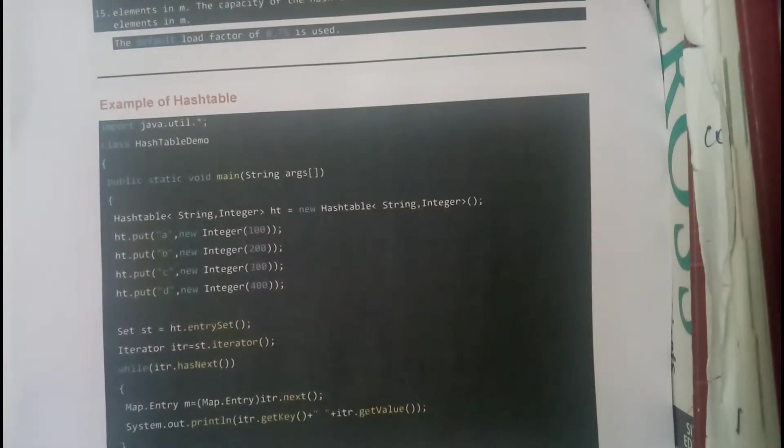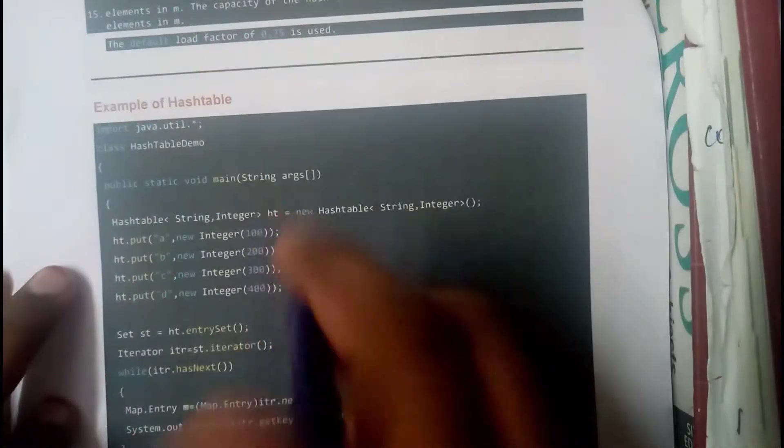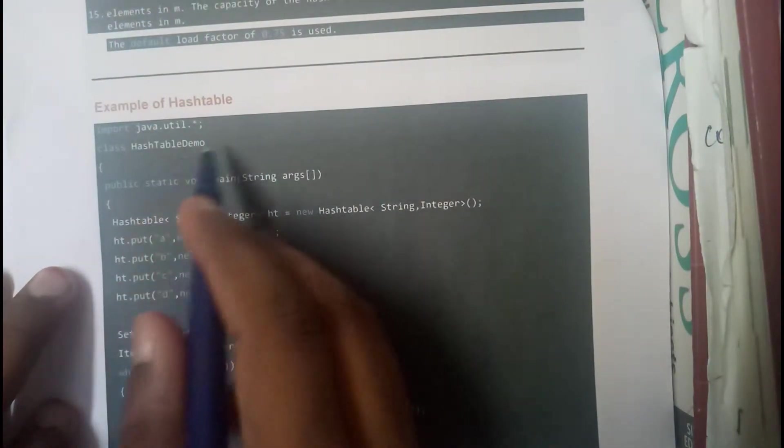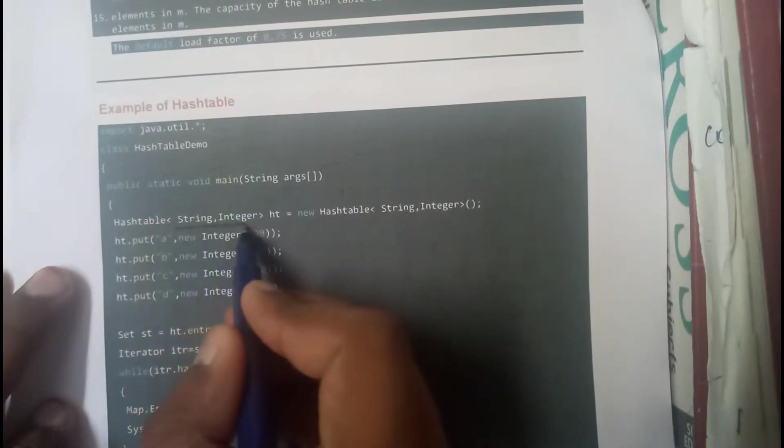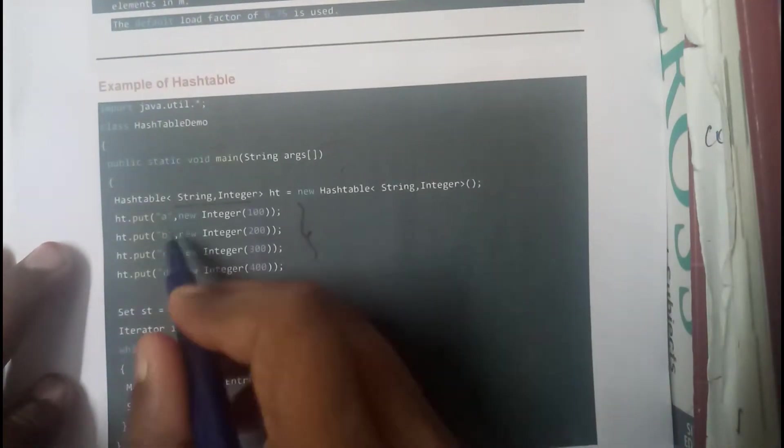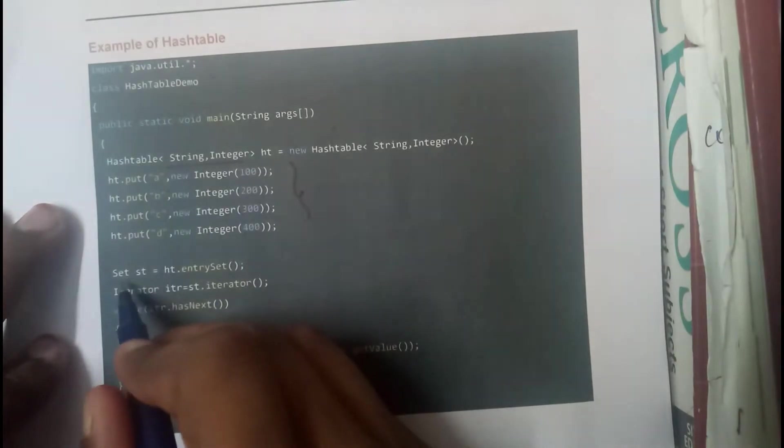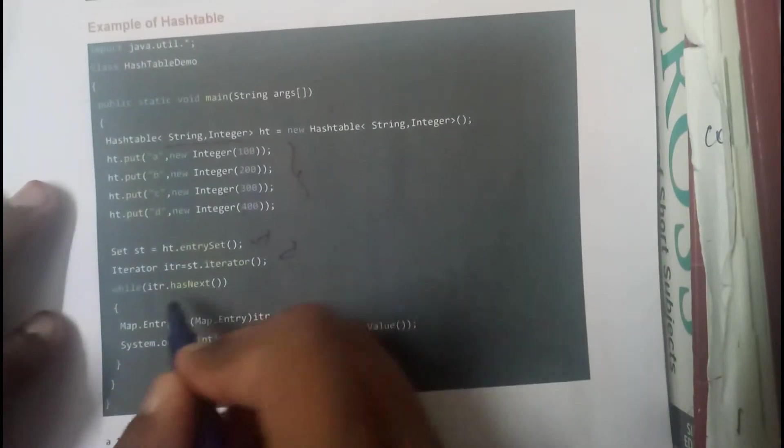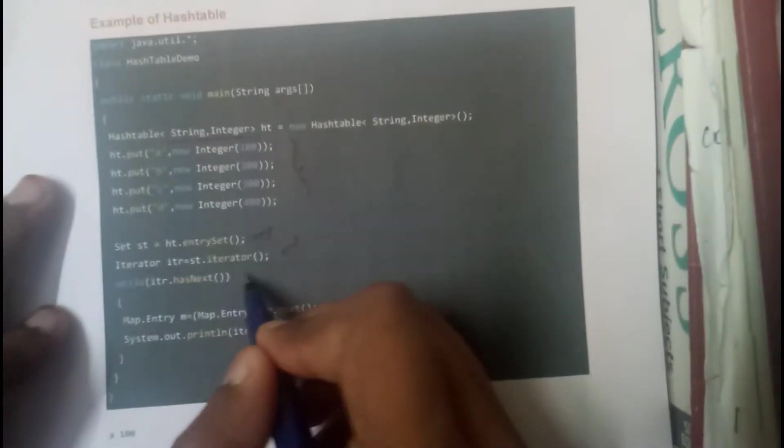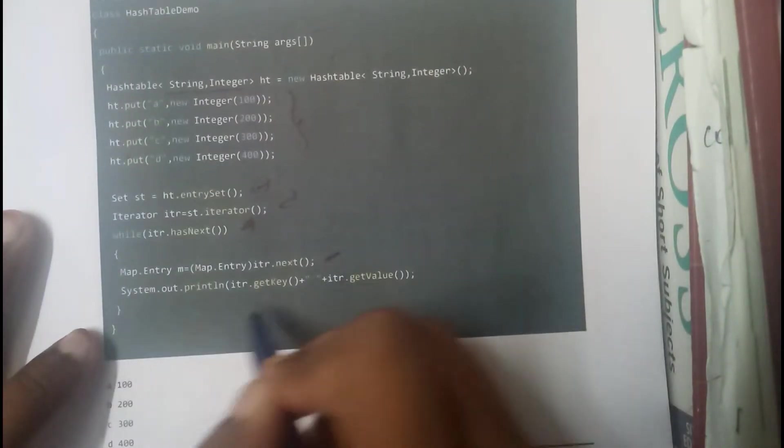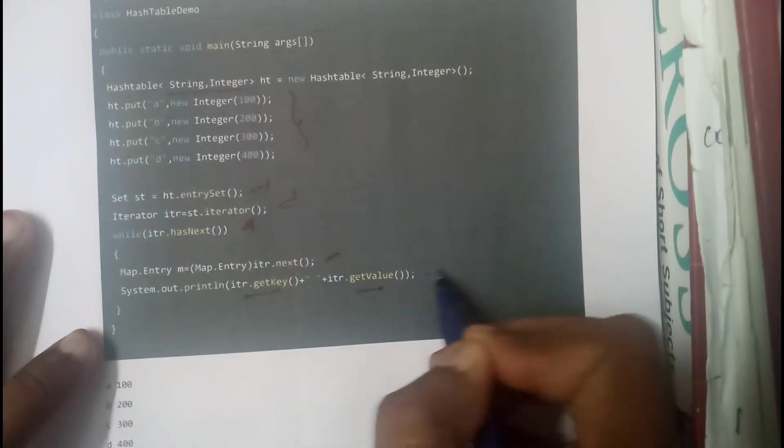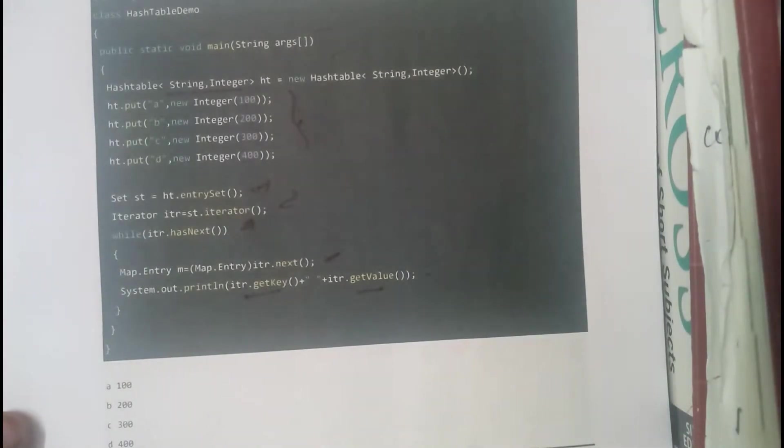I have told you that hash table is almost similar to hash map. It is having two things. We will be just writing the same statements again. Hash table string integer ht equals new hash table string integer. We add a:100, b:200, c:300, d:400. We are initiating a set and here we are using iterator. While iterator has next, if it is having the next value then we will be printing the next value. We will be getting the key as well as the value, we are getting both values and printing both values.